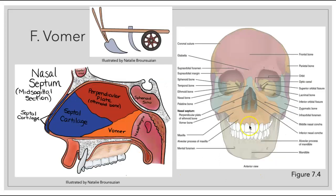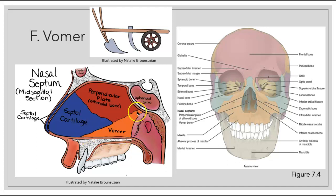Now let's get back to the vomer, which makes up the nasal septum. The vomer was named after a plow used to pull across a field, which would vomit up the earth — so vomer means to vomit, and this bone was shaped like that plow. Notice how in our nasal septum we also have septal cartilage that makes up the anterior piece of the nose, and other cartilage platelets that give us the shape of our nose.